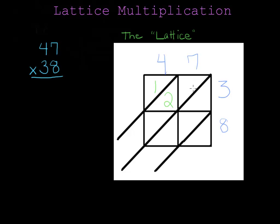This box is where the seven meets the three. So in this box, I will write the answer to seven times three. Seven times three is twenty-one. This box is where the seven meets the eight. So seven times eight is fifty-six. And in this box, that's where the four meets the eight. Four times eight is thirty-two.